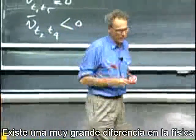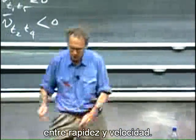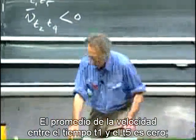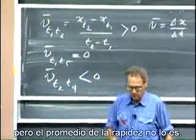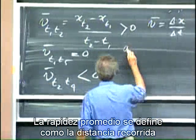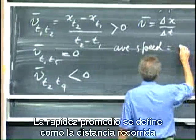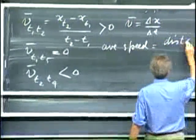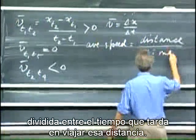There is a very big difference in physics between speed and velocity. The average velocity between time t1 and t5 is zero, but the average speed is not. The average speed is defined as the distance traveled divided by the time that it takes to travel that distance.